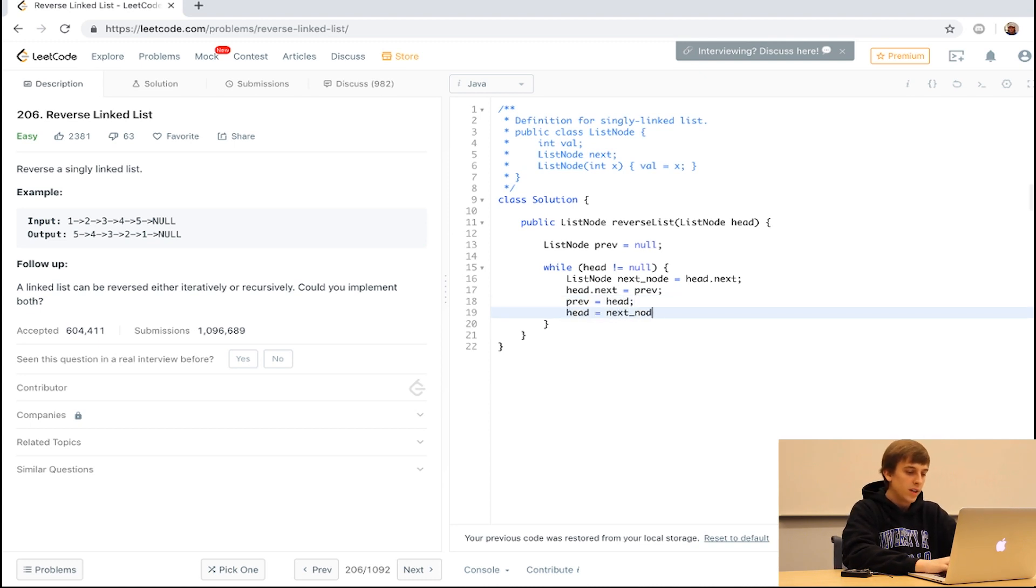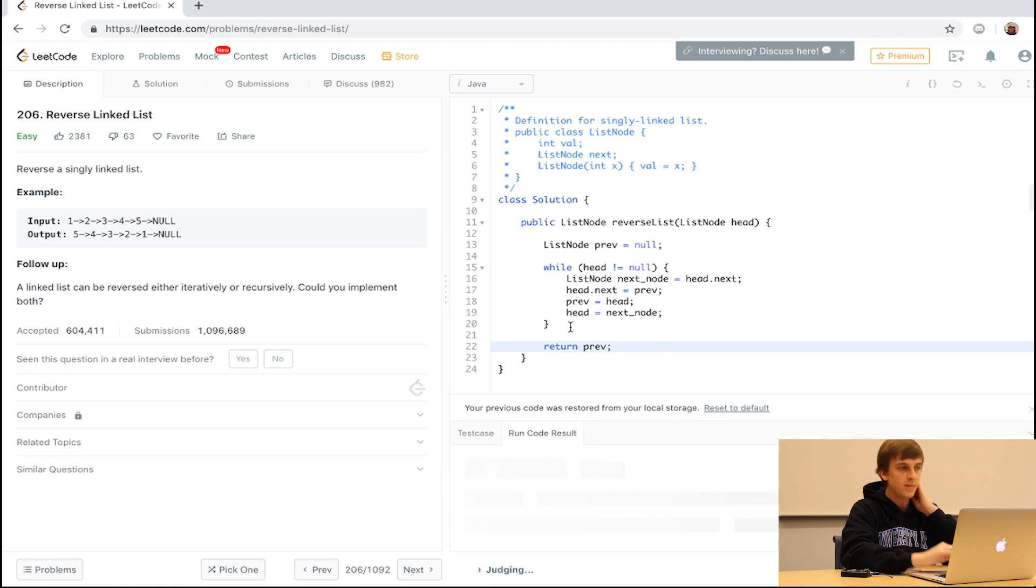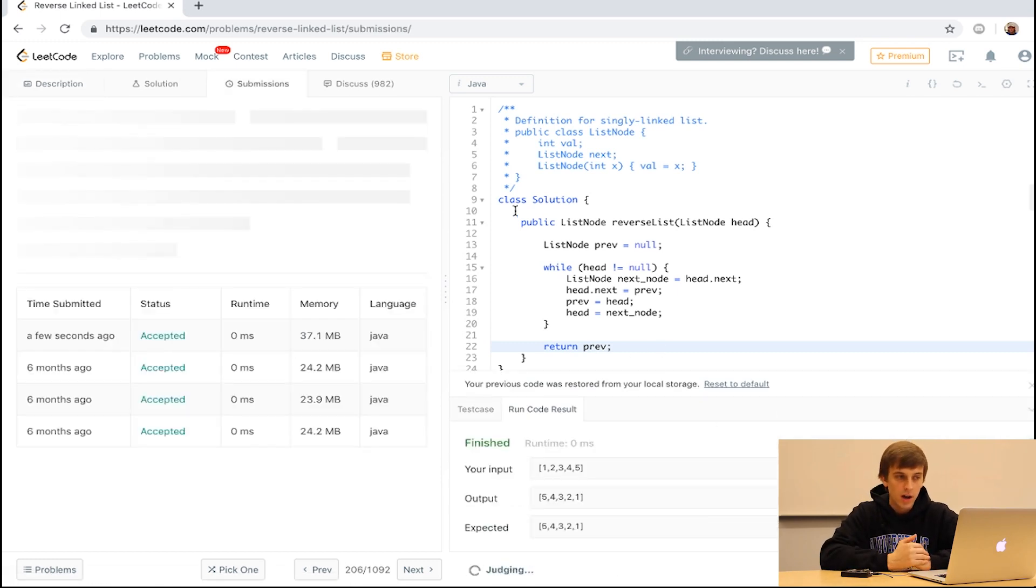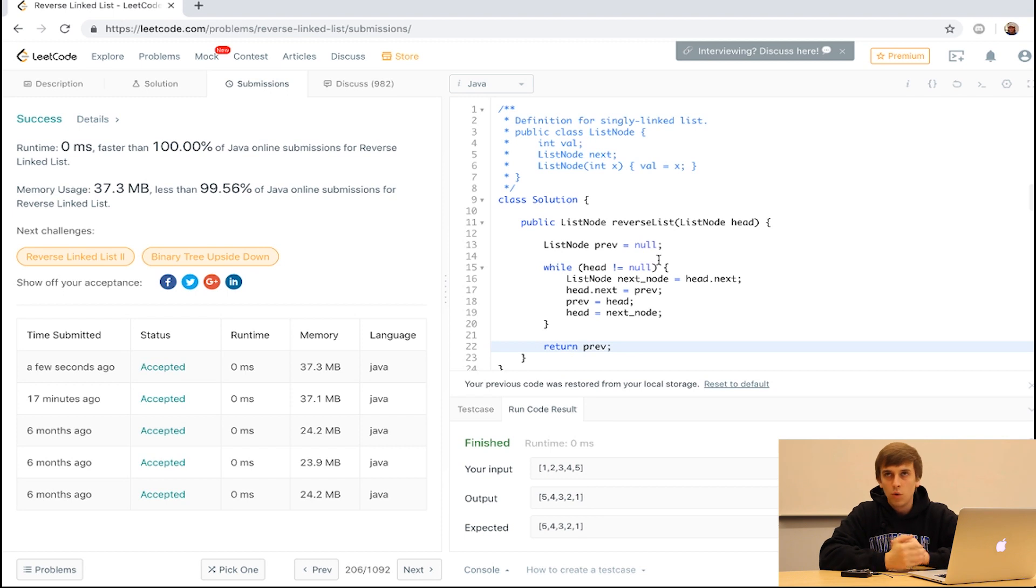Now, to explain this a little more, we can run the code and submit how this works and we'll return previous and it's going to work. And we get a 100% success rate. Just one more time to walk through how this works really quick. We make a previous node and the previous to a head is null, there's nothing before it.